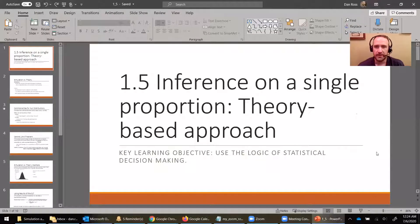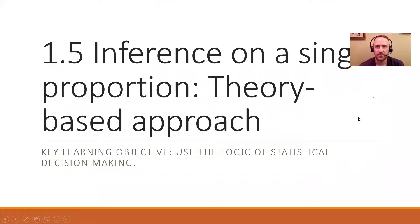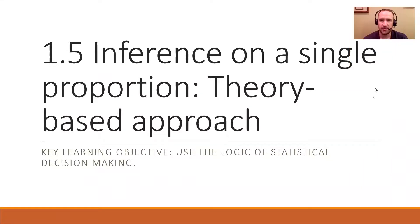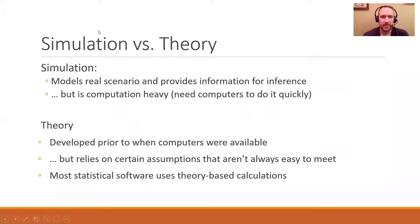As we look at inference on a single proportion — a theory-based approach — our main learning objective is that we're working on learning to use the logic of statistical decision making. We have two main approaches that we'll be talking about in the course. The first one we've looked at is a simulation-based approach, but in this video we'll be focusing on a theory-based approach. Why two approaches, what are the key differences, and why would we choose one or the other?